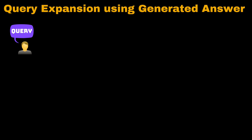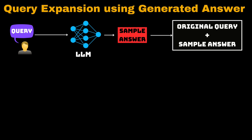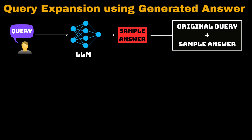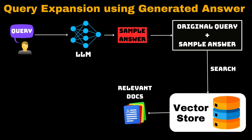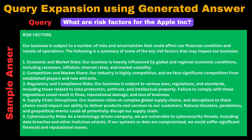For the first approach, query expansion first zero-shot prompts an instruction-tuned LLM to generate a fake answer to the user query. Then the original query is modified to include the fake answer. This modified query can then be used to search for matching documents in the vector store. The generated answer can help capture more keywords commonly found in an answer, hence retrieving more relevant documents.